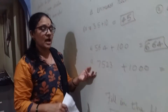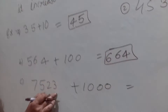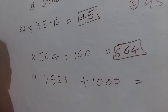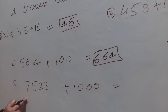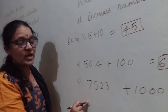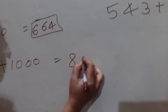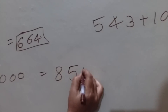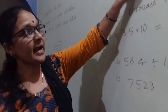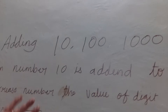Now, this is thousands. 7523 — which place do you have to change here? You have to change only the thousands place. So the answer is 8523. This is called adding tens, hundreds, and thousands.